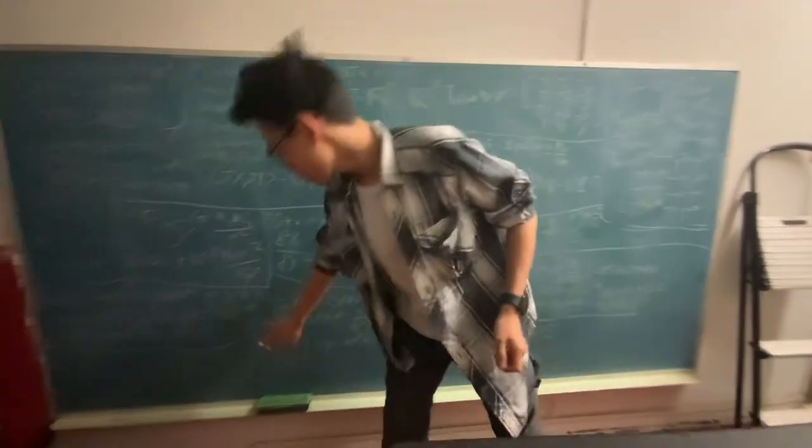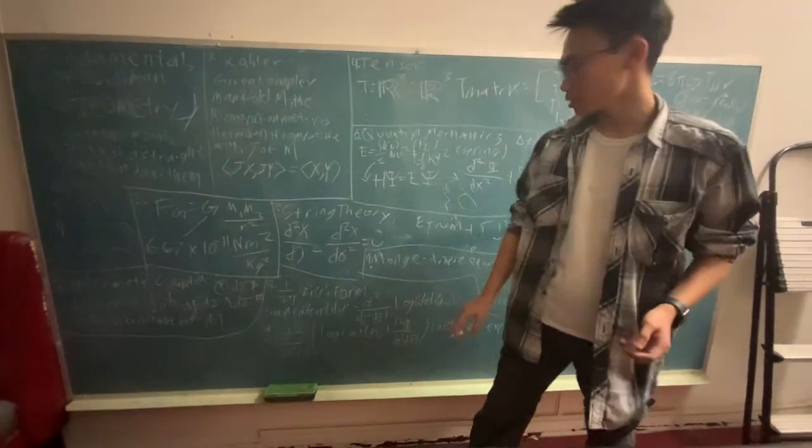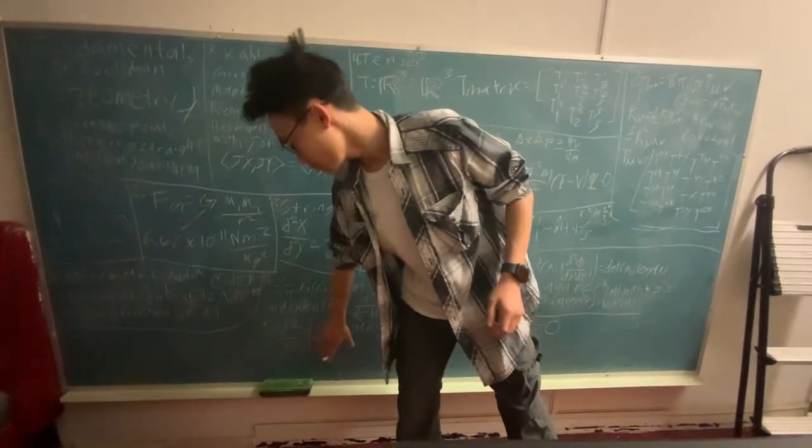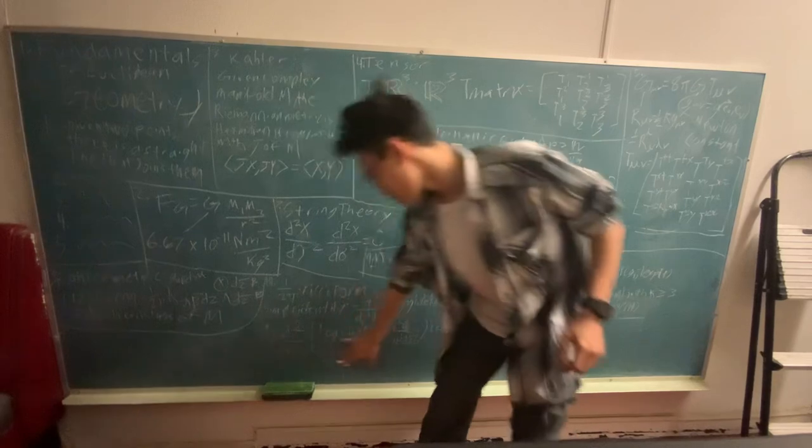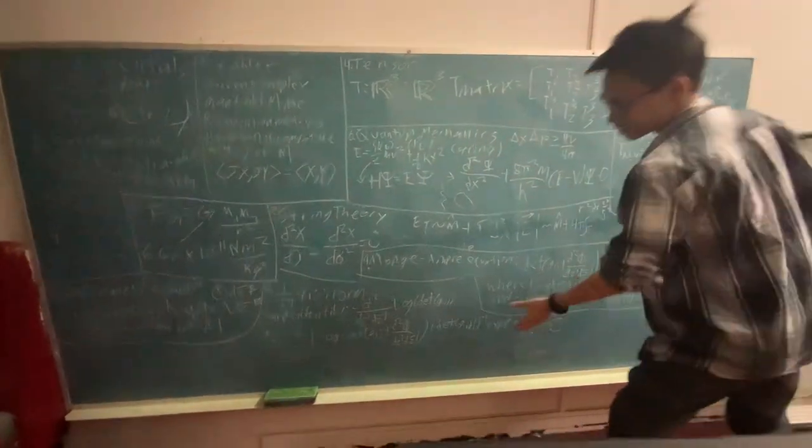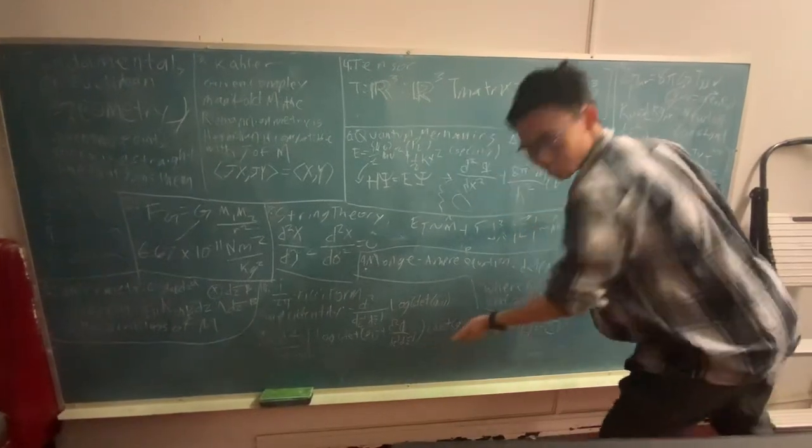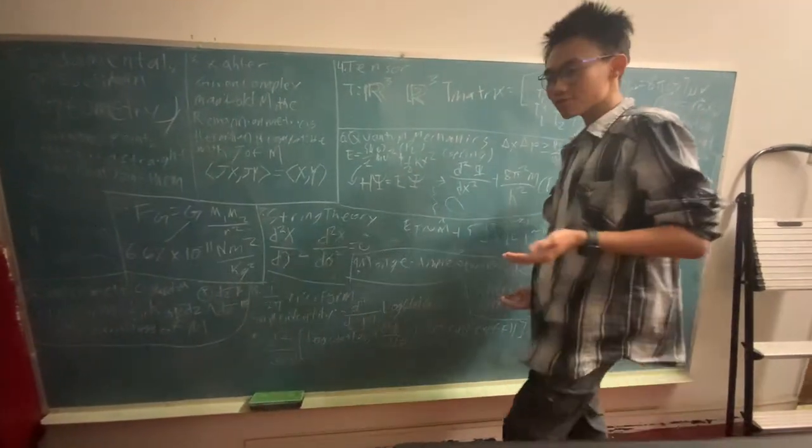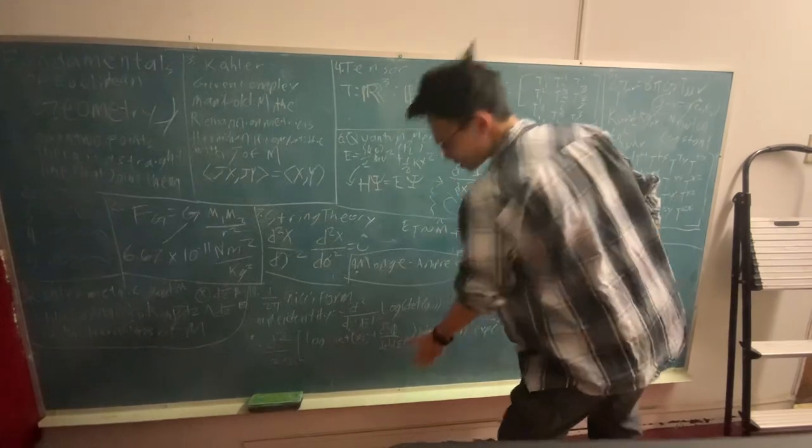One of the proofs given for the Calabi-Yau manifold, given by Yau, was this here. There are then four, like, twelve more pages or something of proof, and I cannot be bothered to do that.